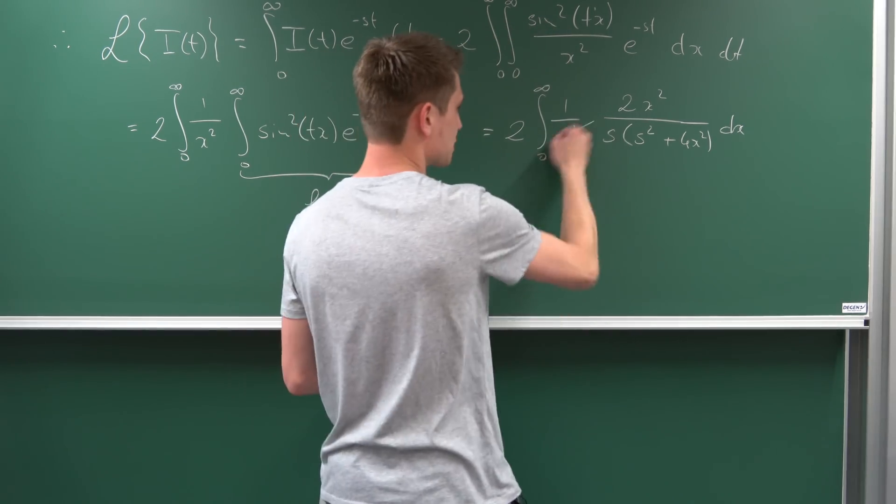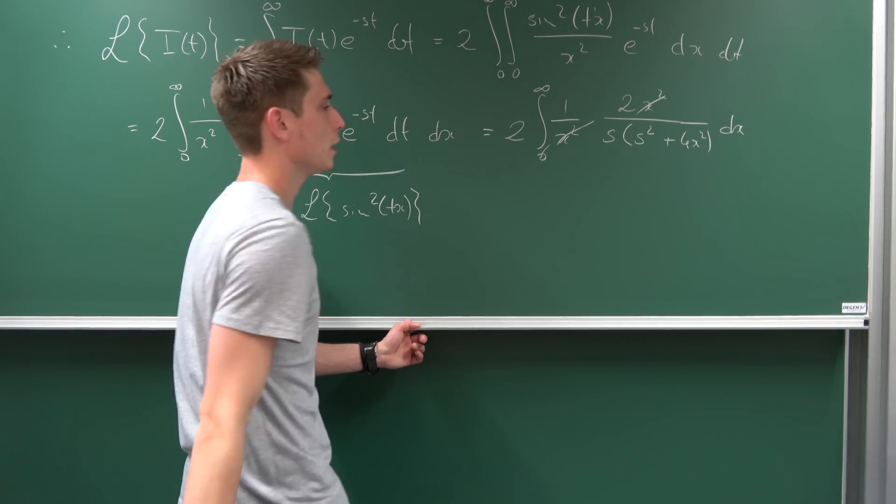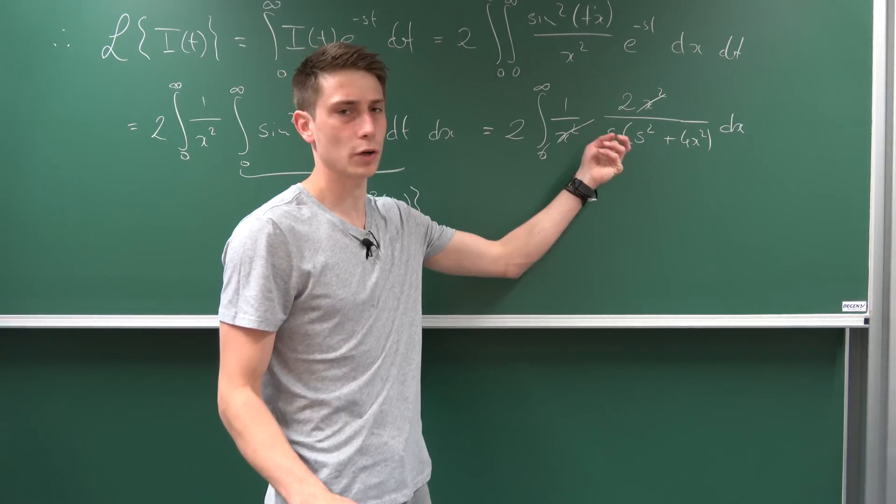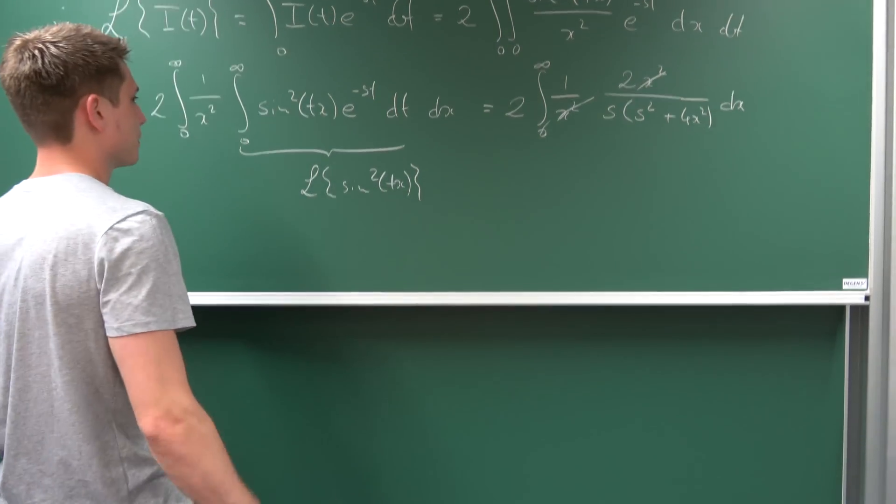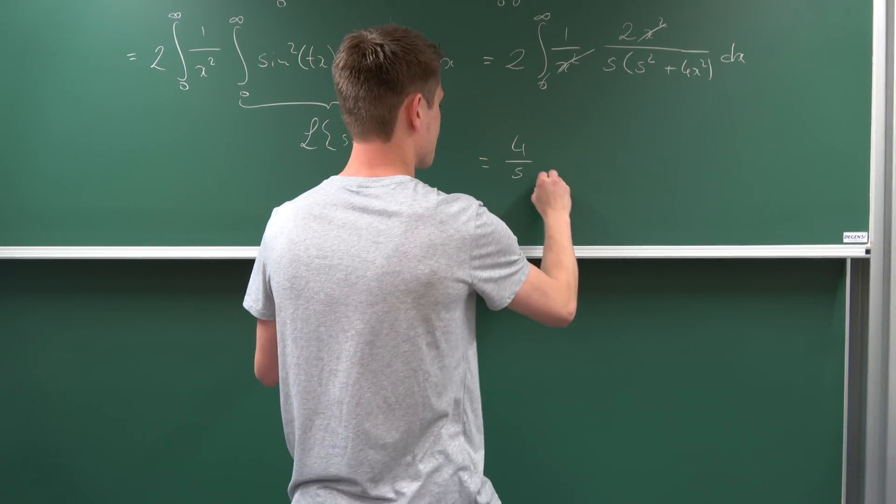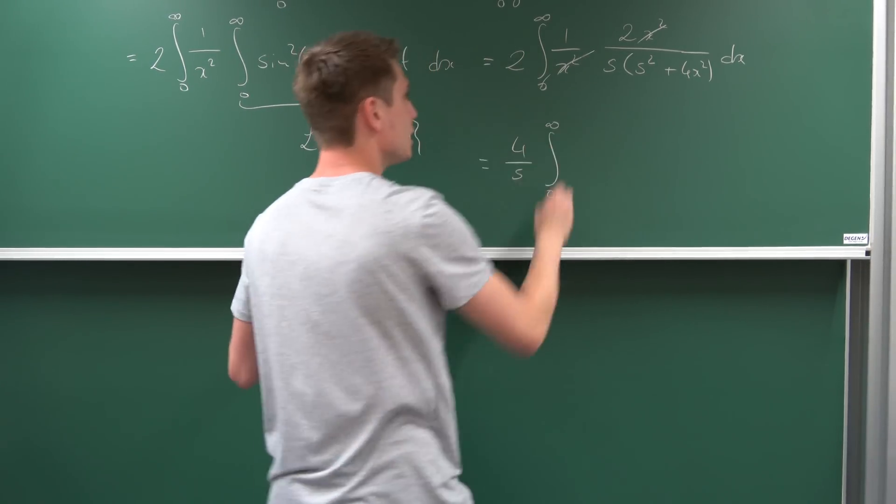You might notice something nice: the x² terms cancel out. We can bring this 2 to the front to make a 4. There's a factor of 1/s we can also bring to the outside. What we end up with now is 4/s times the integral from 0 to infinity of...